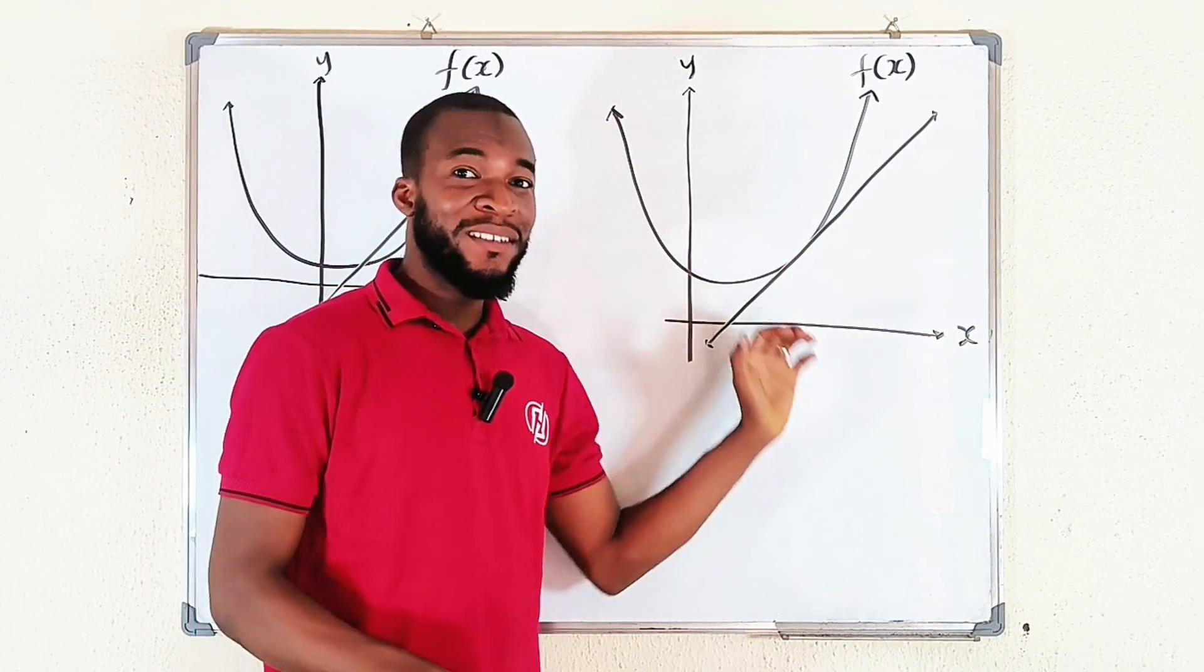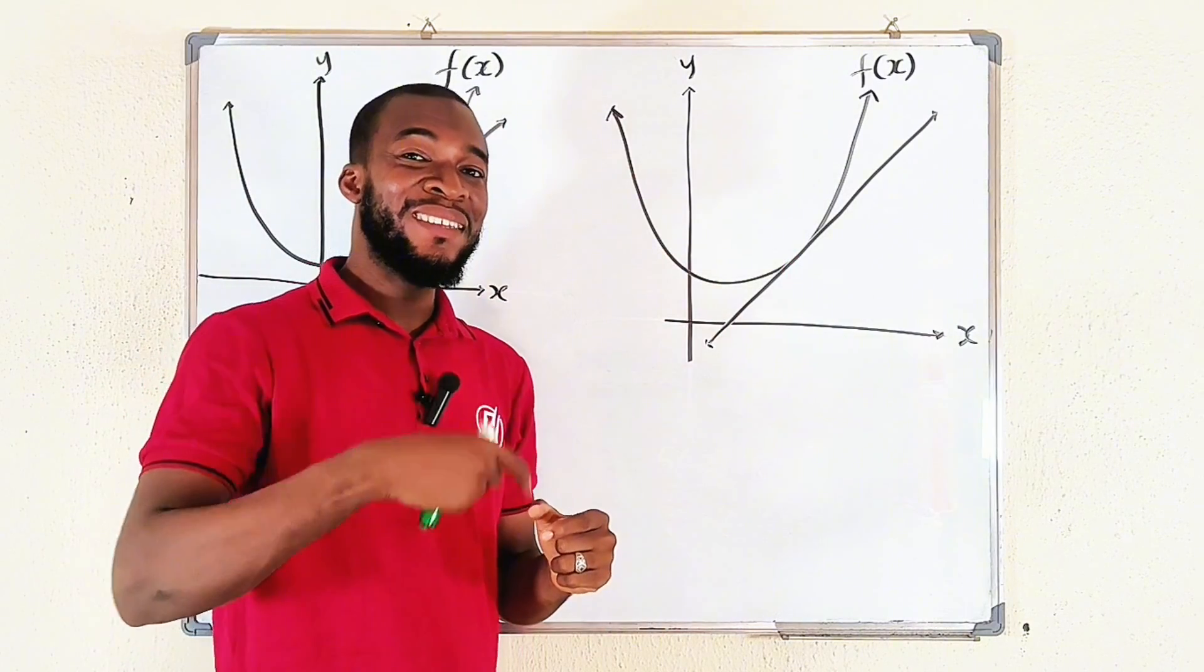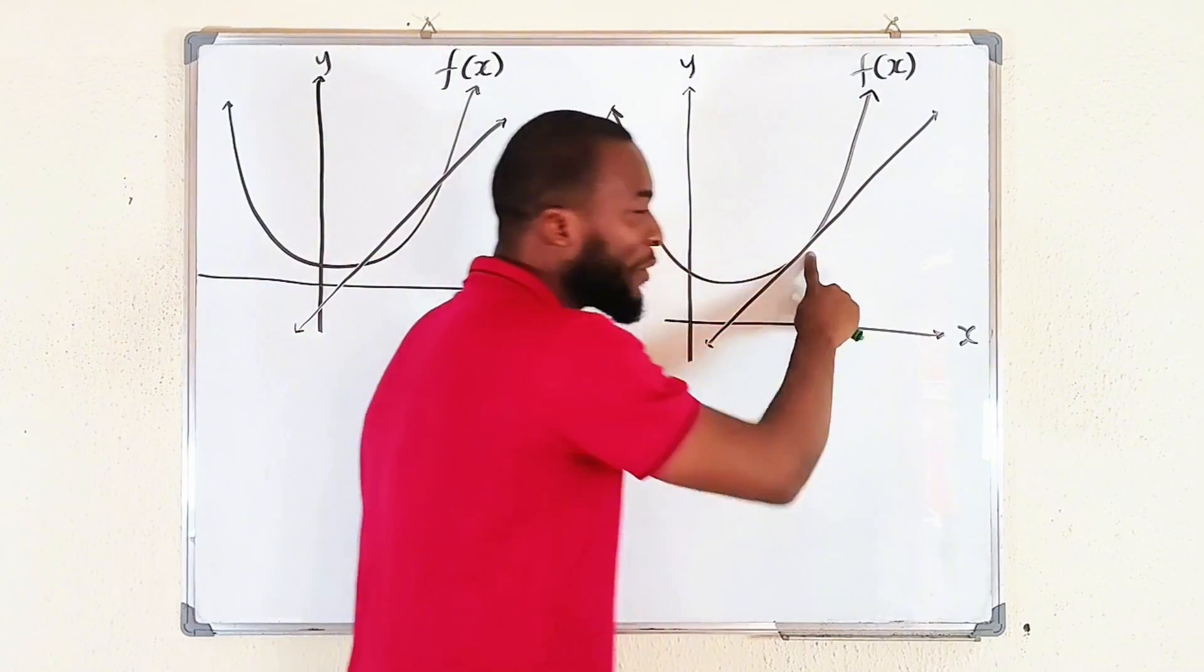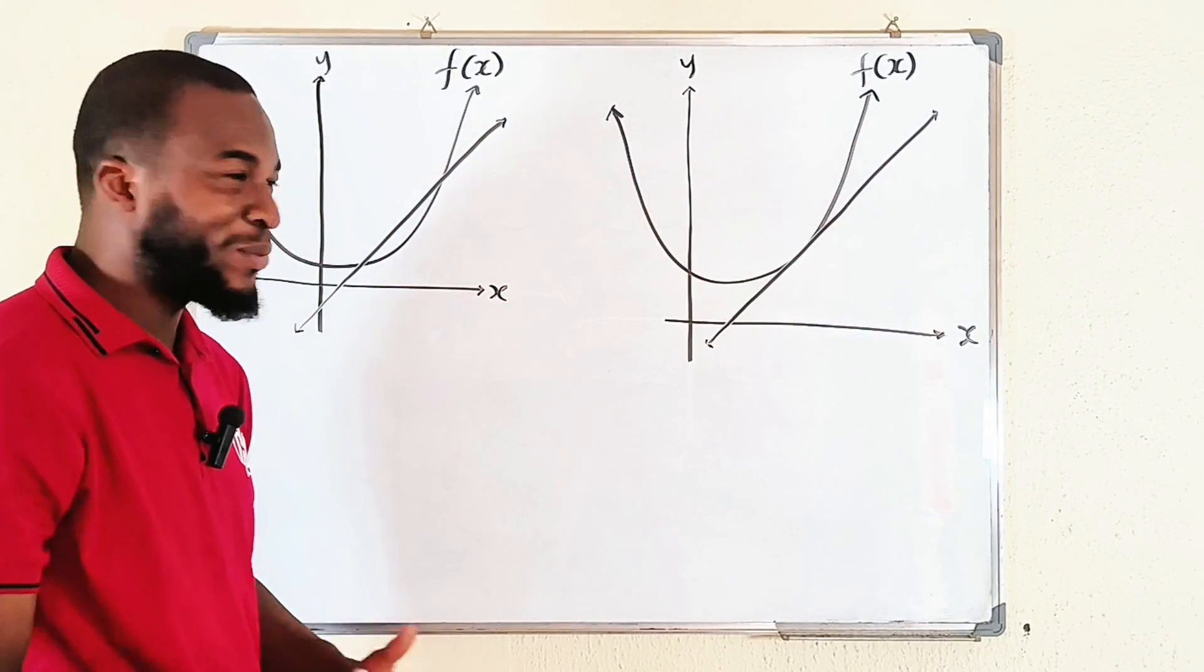While the tangent line represents the instantaneous rate of change of this curve at a particular point. That's the difference between them.